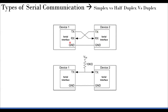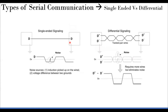Another important classification — especially for electrical/electronics engineers — is single-ended versus differential signaling. In single-ended signaling, both devices share a common ground and the voltage on the line is measured with respect to that ground. Noise interference can create false high or low readings, which is a serious problem, particularly in single-wire transmission.